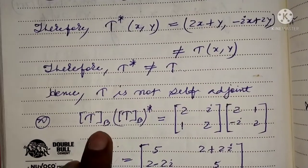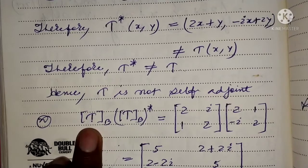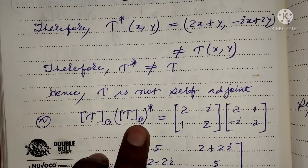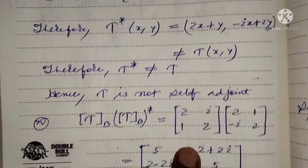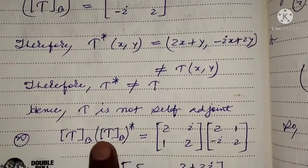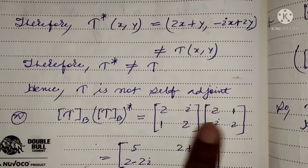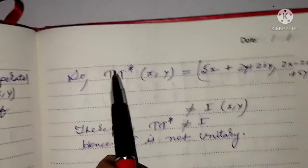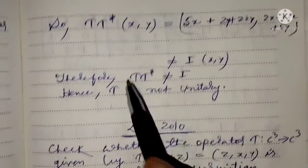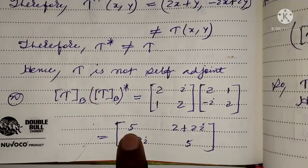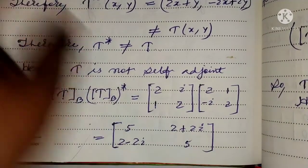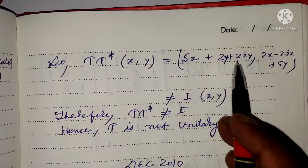After that, for T to be unitary, we compute the matrix of T multiplied by the conjugate transpose of the matrix of T with respect to the basis. Multiplying both matrices gives us T·t* of (x, y) equal to (5x + (2+2i)y, ...).